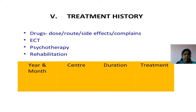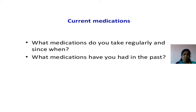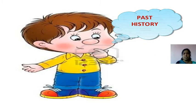Treatment history includes: drugs, doses, route, side effects, compliance, ECT, psychotherapy, rehabilitation — noting month, year, center, duration, and type of treatment received. Also, current medications: what medications the patient takes regularly and since when, and what types of medications were taken in the past.